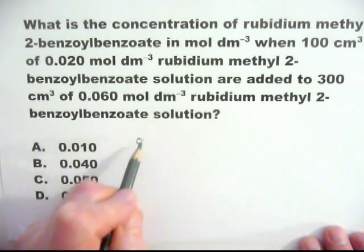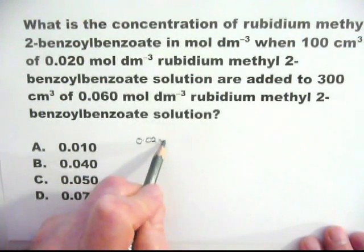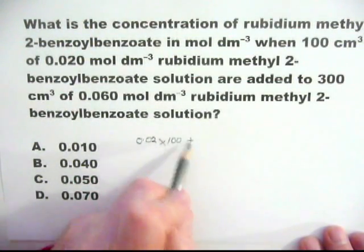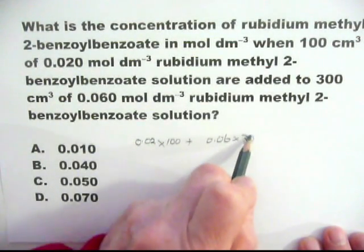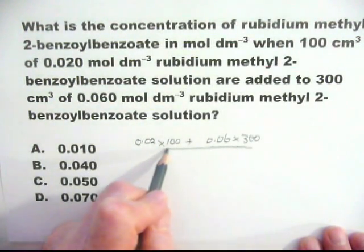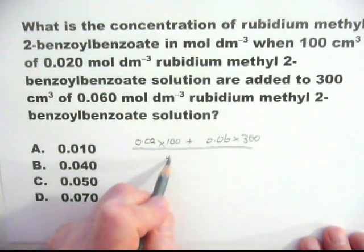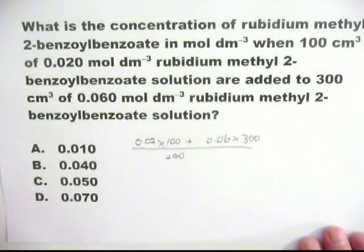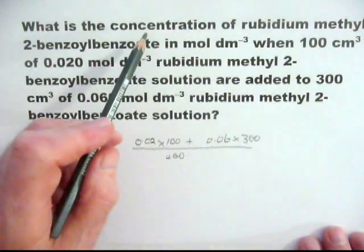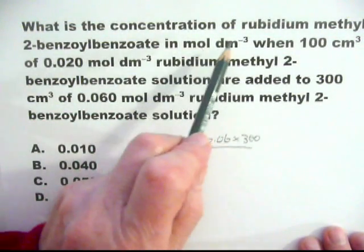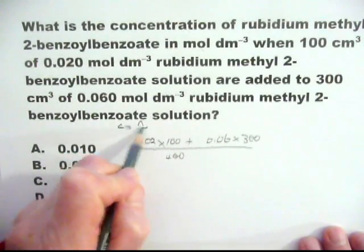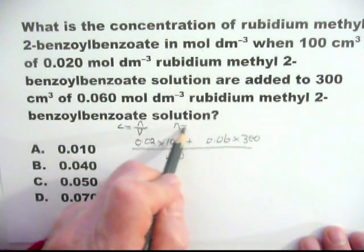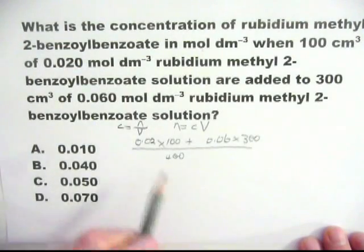It's 0.02 times 100 plus 0.06 times 300, and divide it by the total volume, which is 100 plus 300, which is 400. Just to remind you, the two formulas that I'm using are concentration is moles over volume: C equals N over V. And then rearrange it to N equals CV.